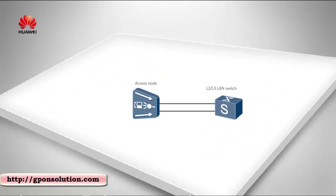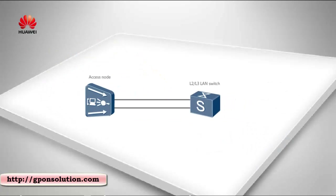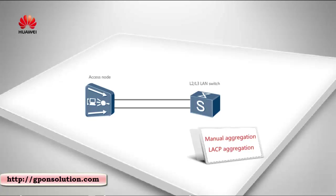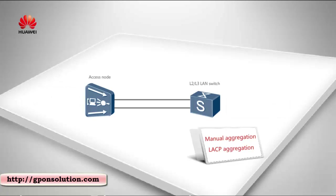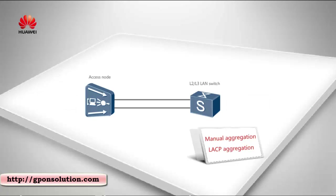The access devices support two Ethernet link aggregation modes: manual aggregation and LACP aggregation. In manual aggregation, the devices on both link ends will not run the LACP protocol. In LACP aggregation, the devices will run the LACP protocol, which controls aggregation groups in a more accurate and effective way.